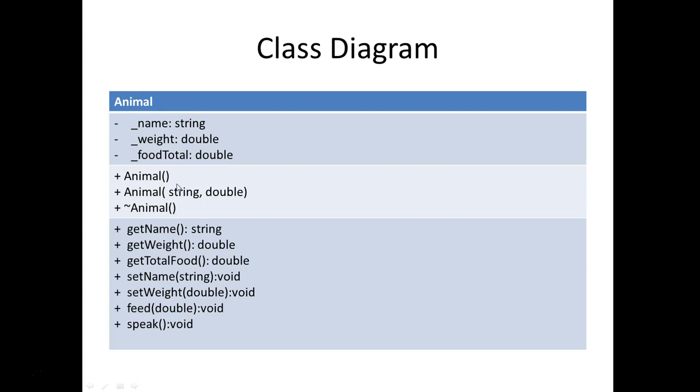The constructor always has the name of the class. The name of the class is animal, and we will have a default, and then we will have a parameterized constructor. At the very end, we might not have both of those, but to start with that's what we're going to use.